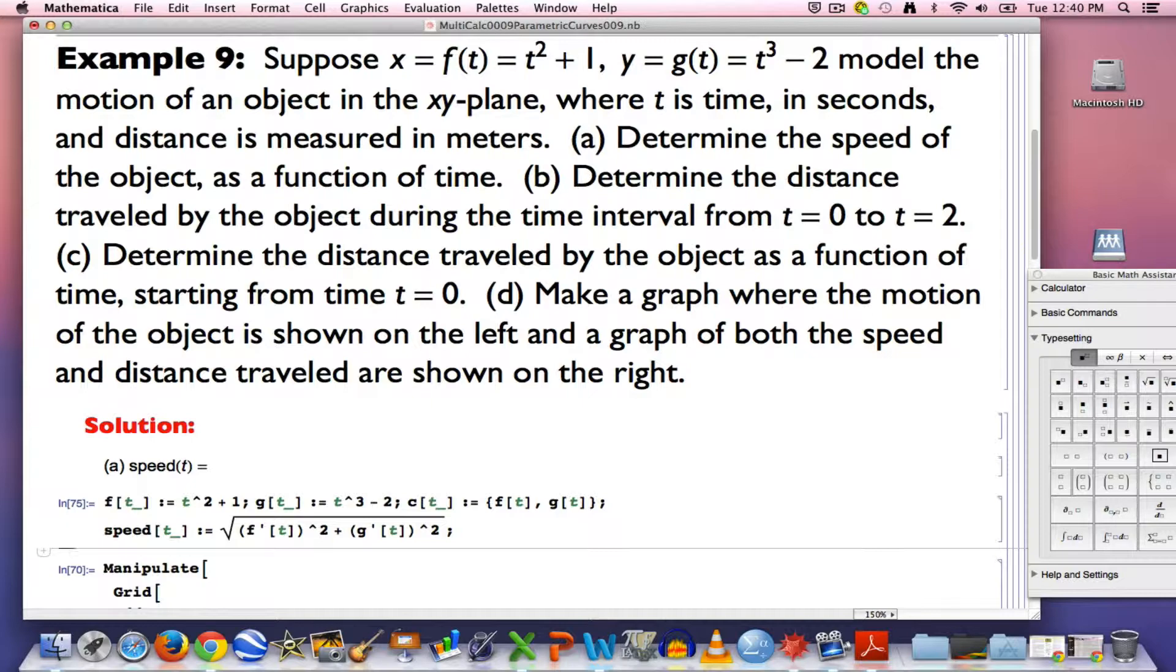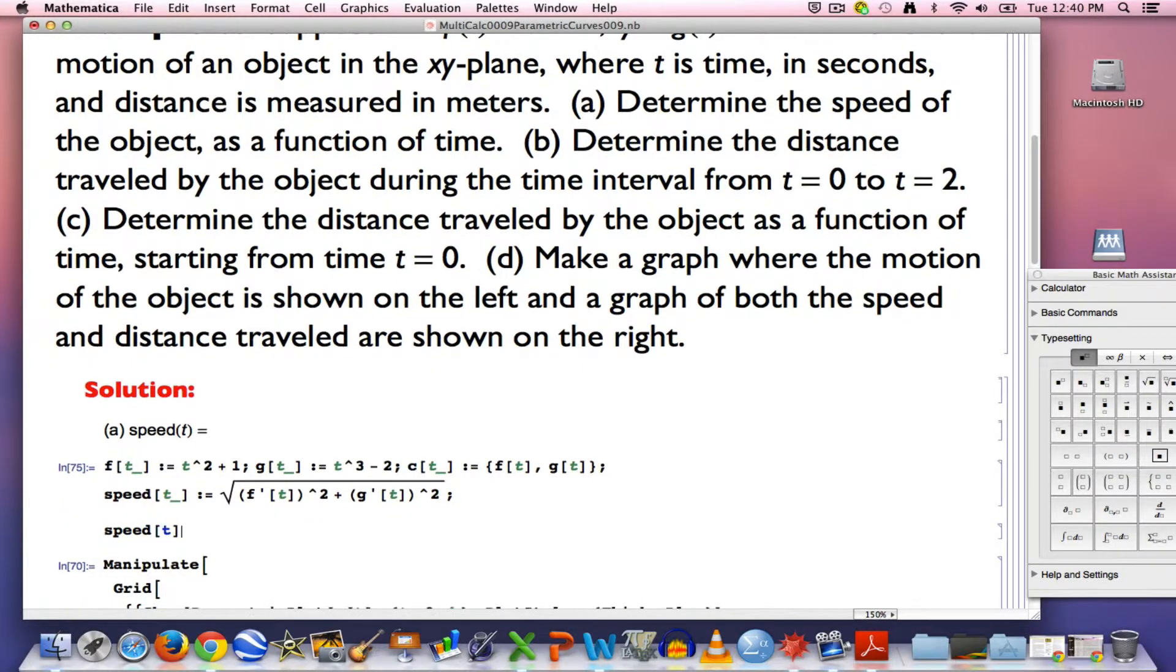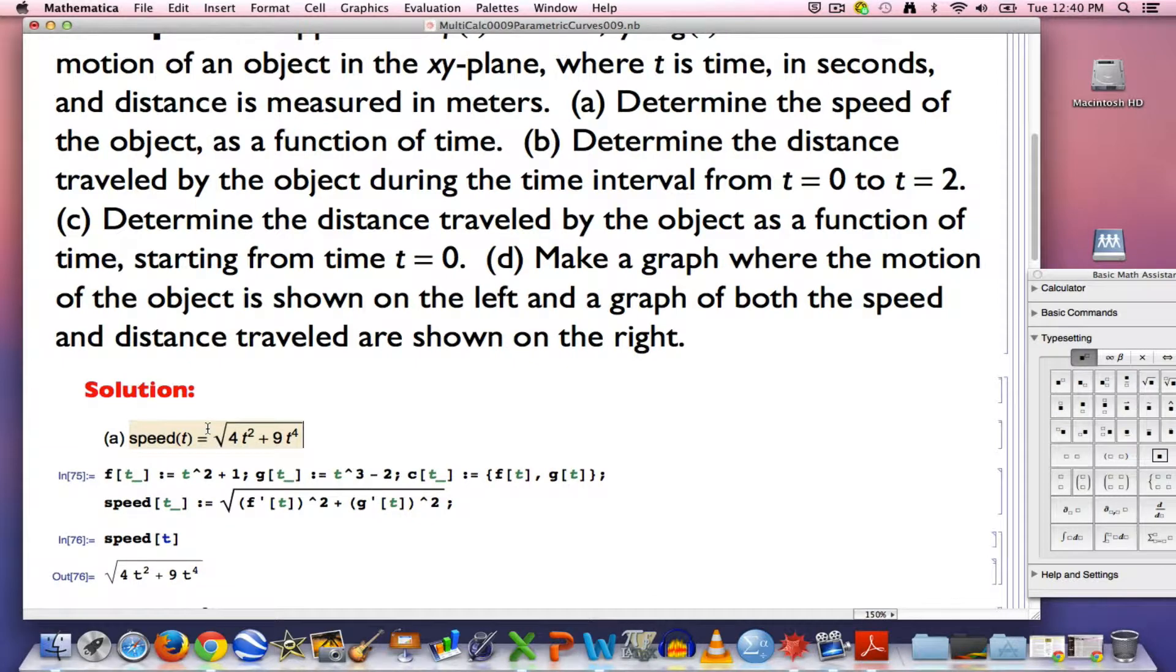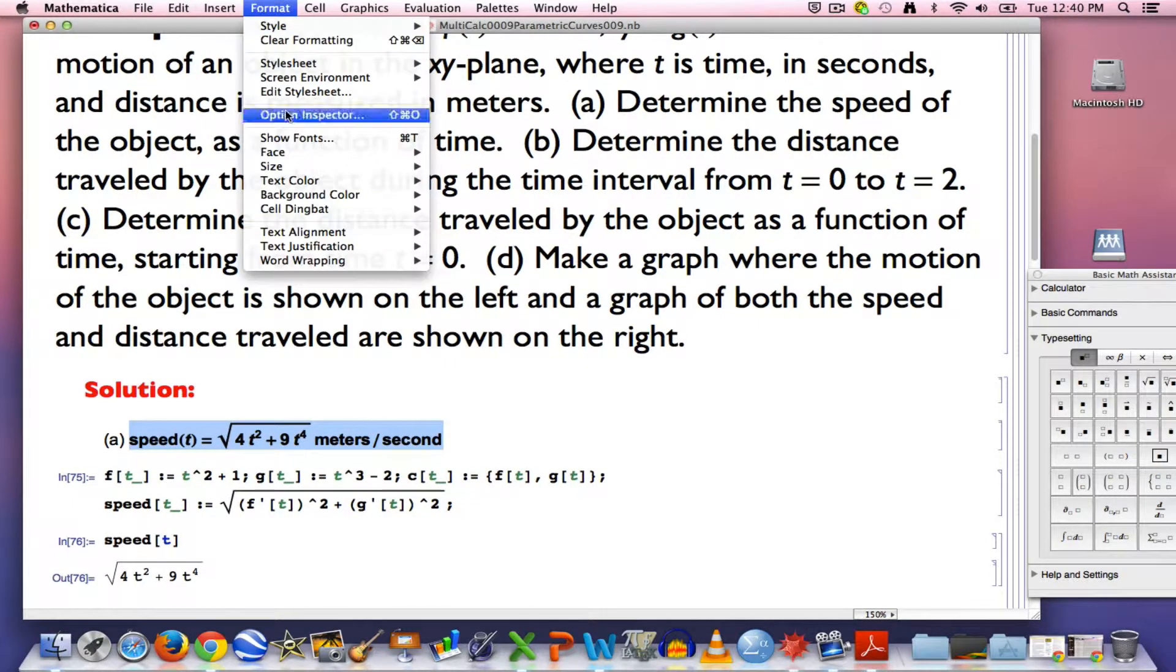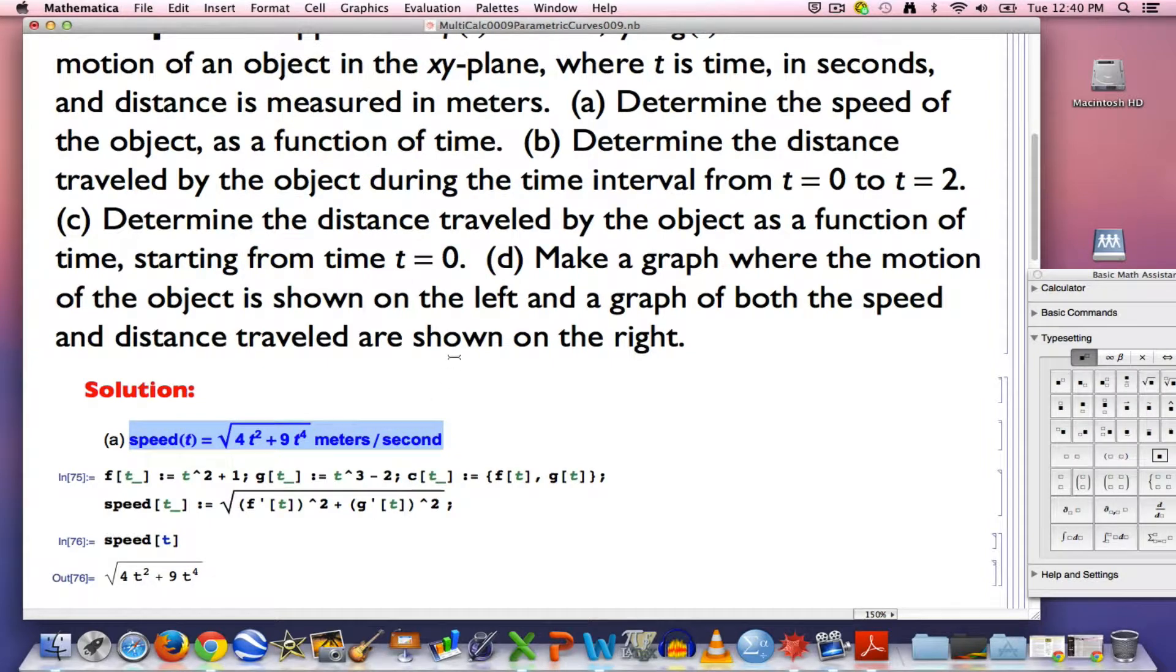What does it equal? You should do the calculation by hand and simplify. In the end, here's the answer that you should get. The speed as a function of time is √(4t² + 9t⁴). Based on the units that we're given, that would be in meters per second. That's the speed as a function of time. That's part A.